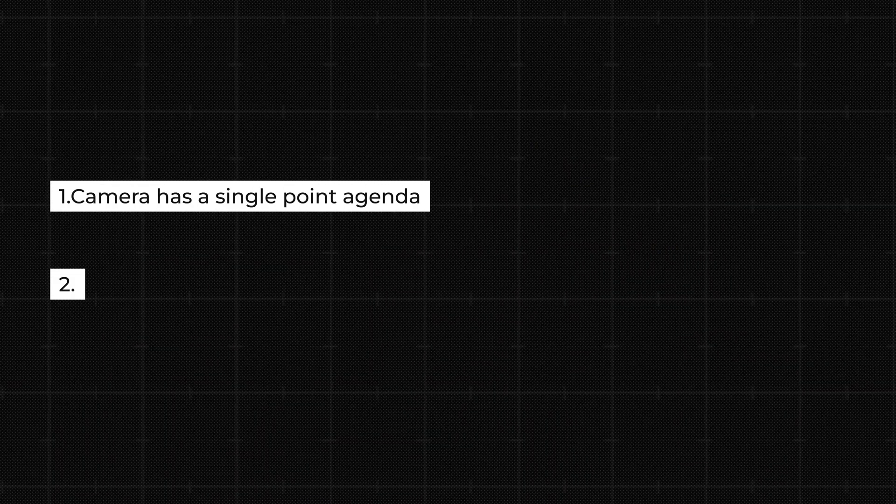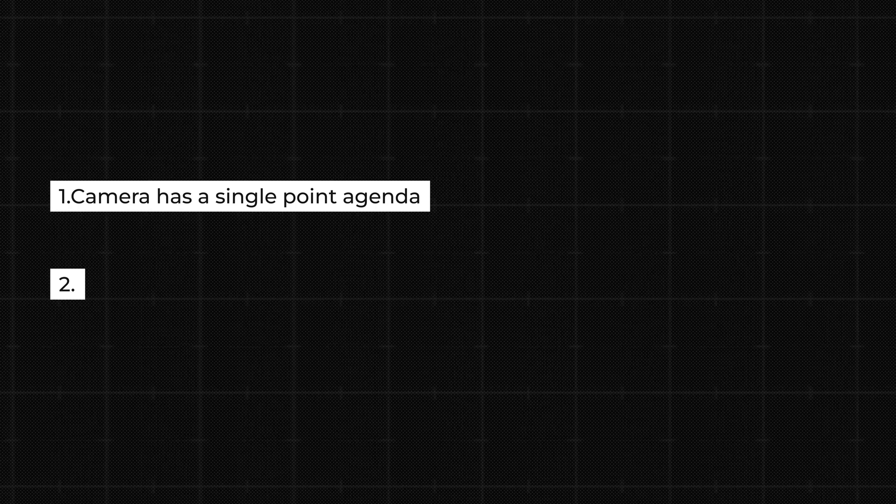So coming to question number one: how does the camera determine its exposure settings when it is photographing in auto mode? To answer this question, there are two points to keep in mind. The first one is that the camera has a single-point agenda, and that is to get the correct exposure. It's got absolutely nothing to do with depth of field, motion blur, or noise — these are creative choices left to us photographers. But for the camera, it's all about getting the correct amount of light in the photograph.